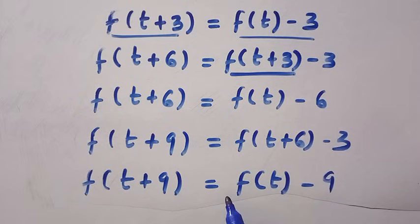So what we get here is, f is always decreases by 3, each time t increase by 3. So that is the pattern I derived.